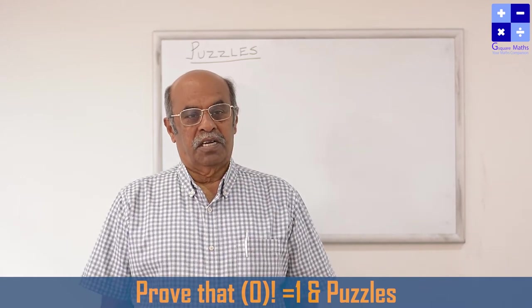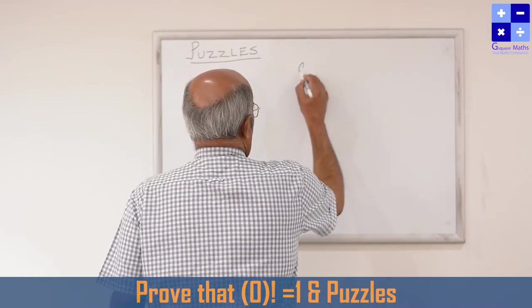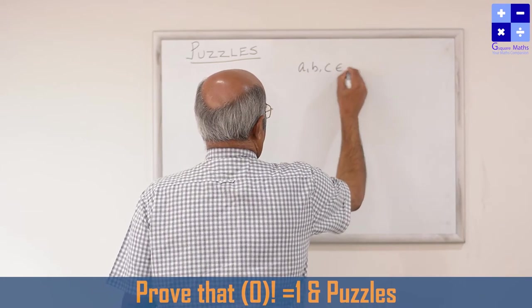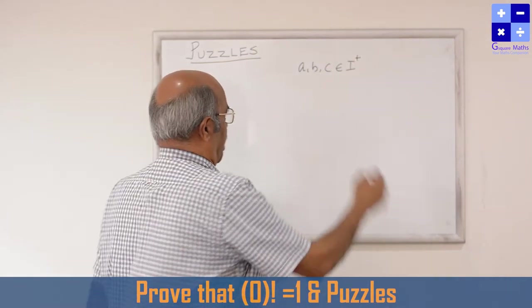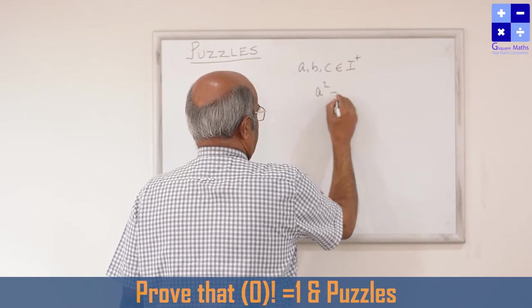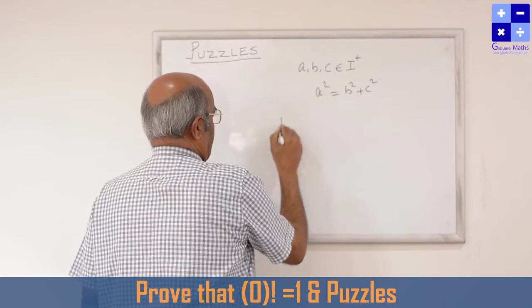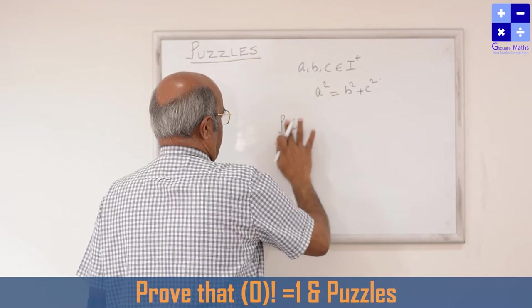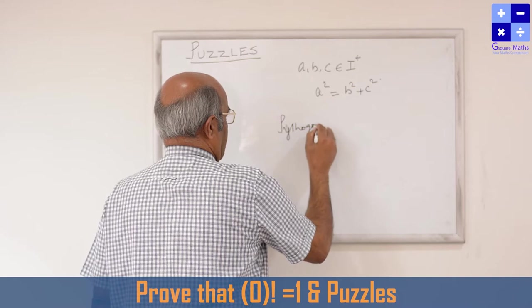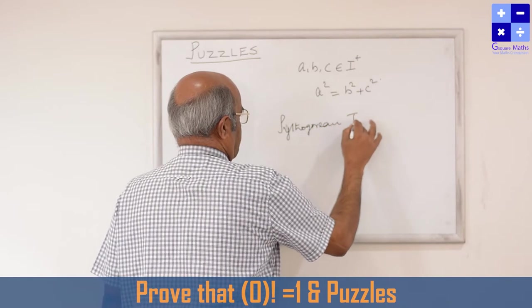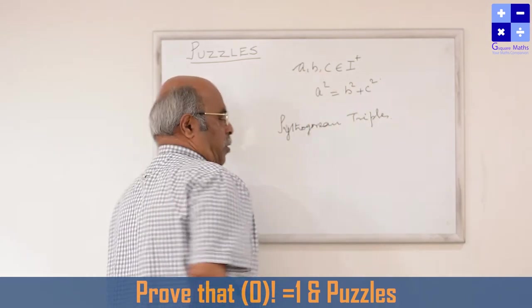Let A, B, C be any positive integers, such that any one square is equal to the sum of the squares of the other two sides. Then A, B, C are known as Pythagorean triples.